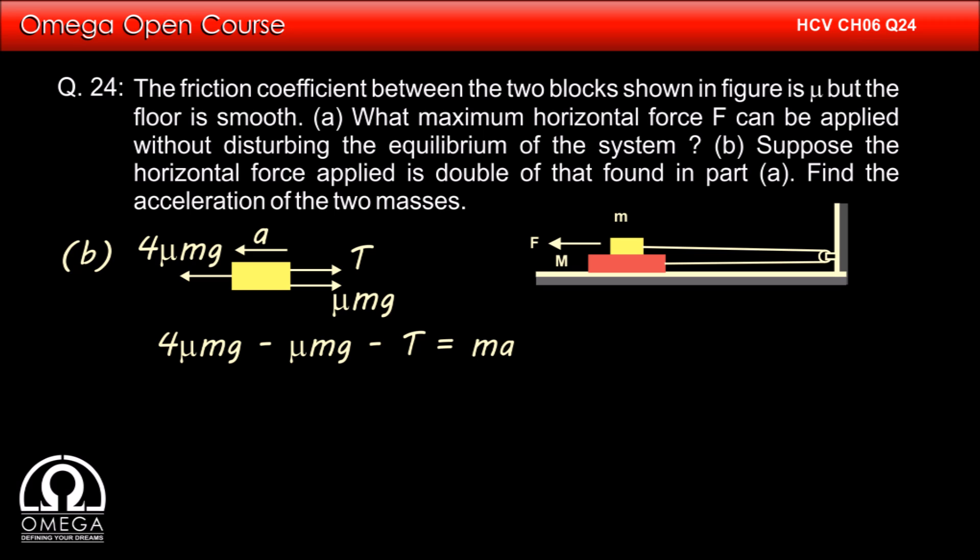Then in this case, 4 mu mg minus mu mg minus T must be equal to MA, or 3 mu mg minus T is equal to MA.